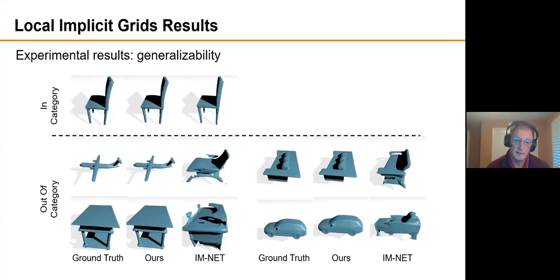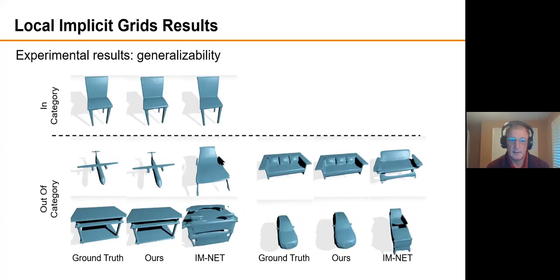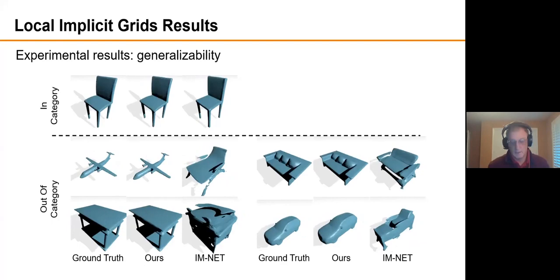Their latent space only includes things that are in category, only includes chairs. So even if you show it an airplane, it still has to produce a chair. Whereas our airplane is represented by composing grid-sized local shapes that came from chairs, but into an airplane.